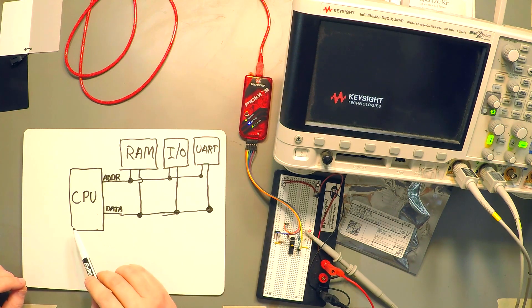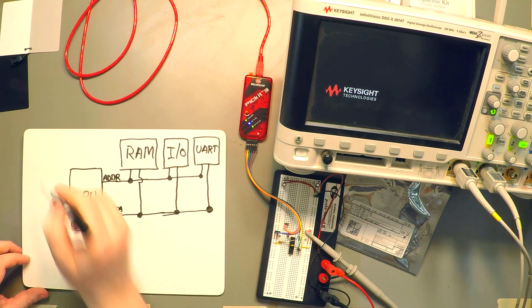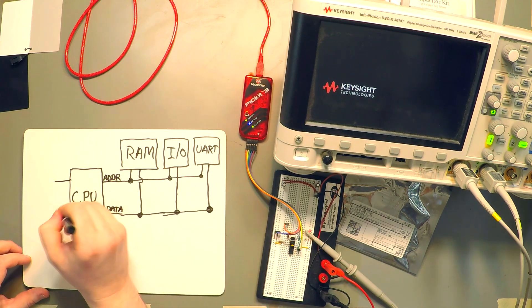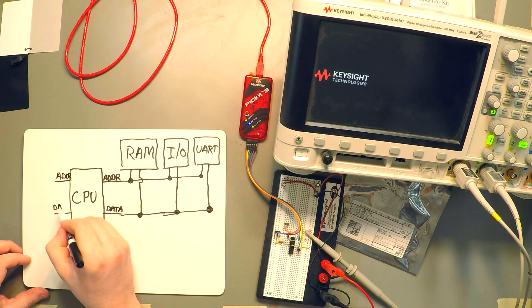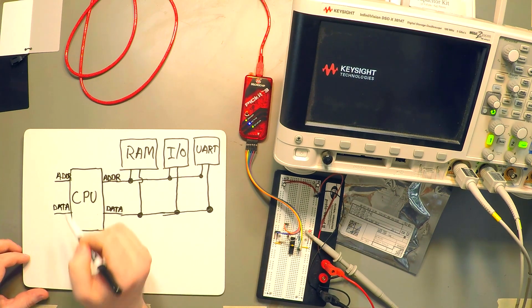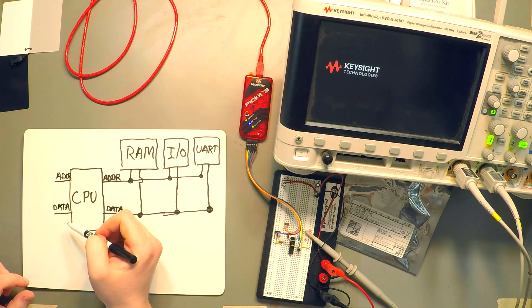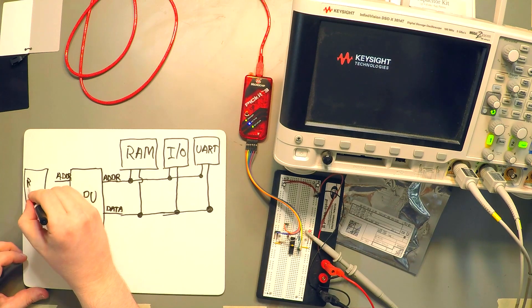Now, depending on the architecture, we may also have another set of address. So another address bus here and another data bus here. So we'll have another set of buses that would go to some sort of read-only memory, ROM or flash memory.